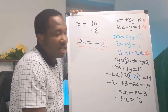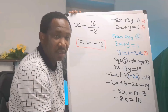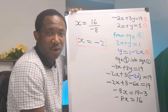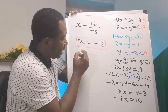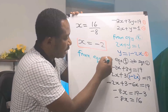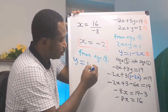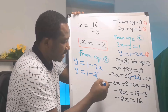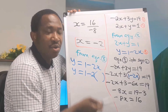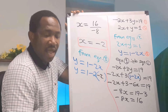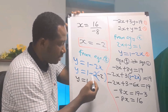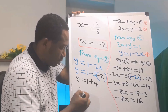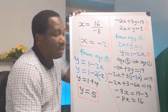Now we have obtained the value for x. We can substitute x equals minus 2 into equation 1, 2, or 3. However, if you look at equation 3, it is already positioned for us to obtain y directly. From equation 3, y equals 1 minus 2x. The value of x is minus 2, so y equals 1 minus 2 times minus 2. Minus times minus is plus, so 2 times 2 is 4, and y equals 5.